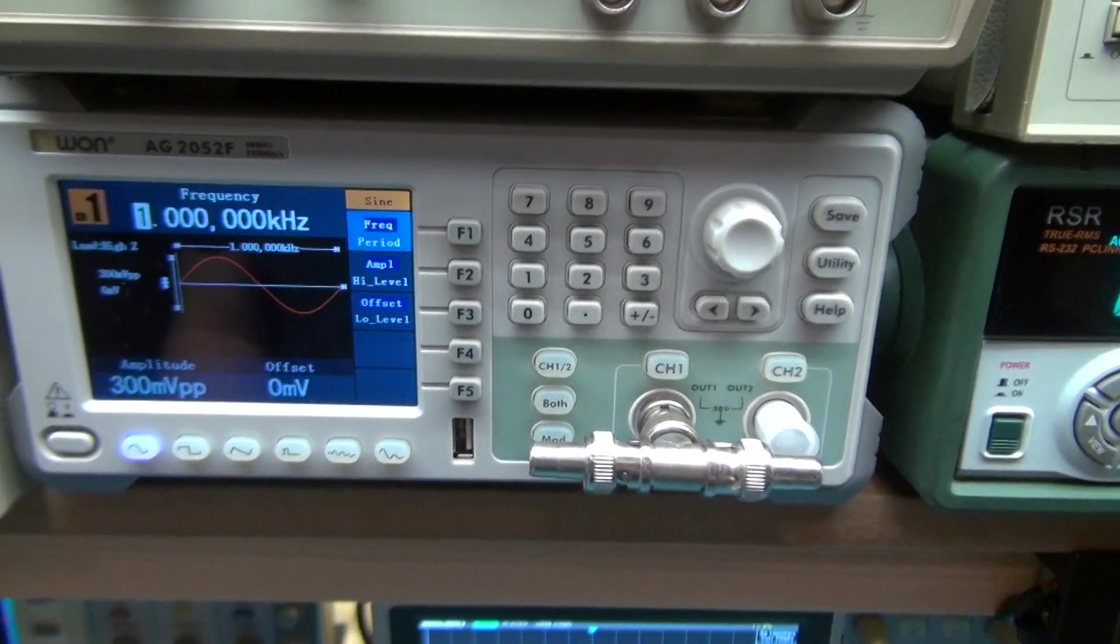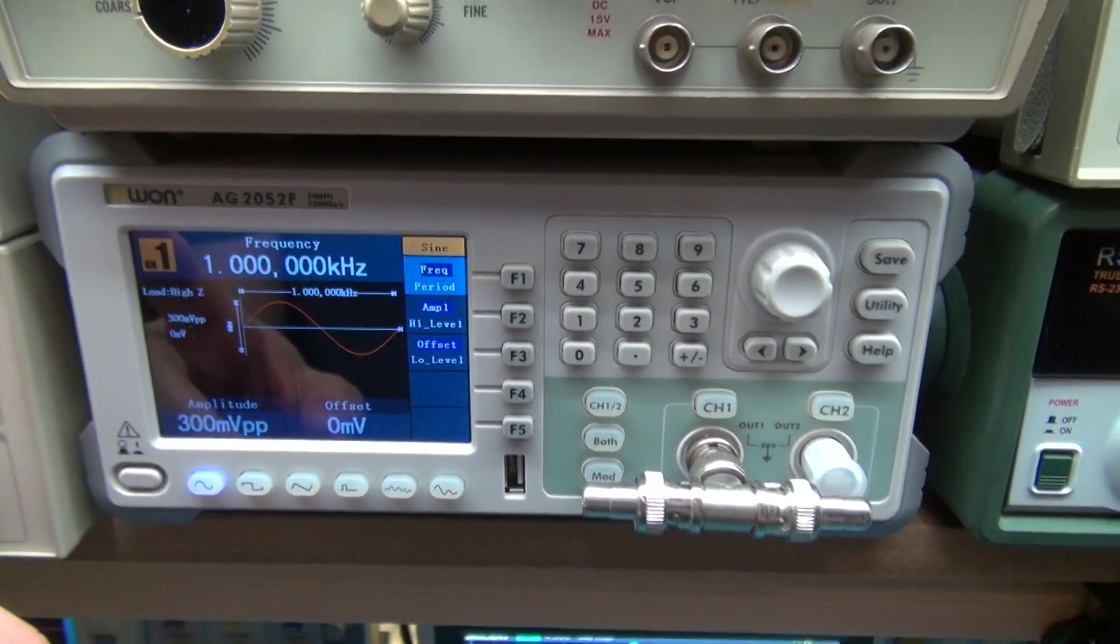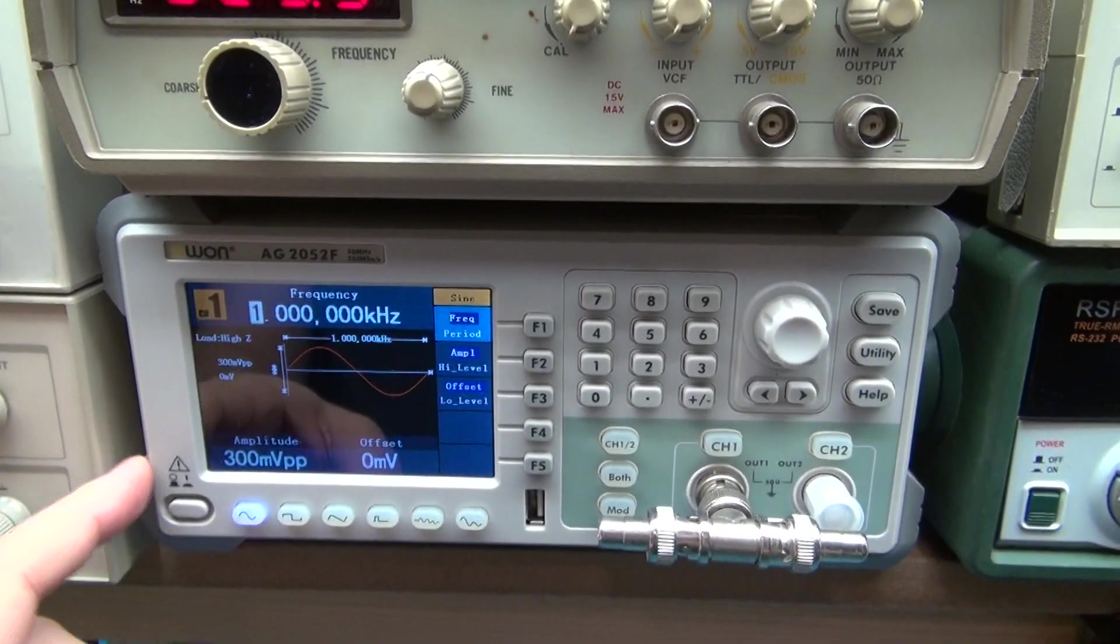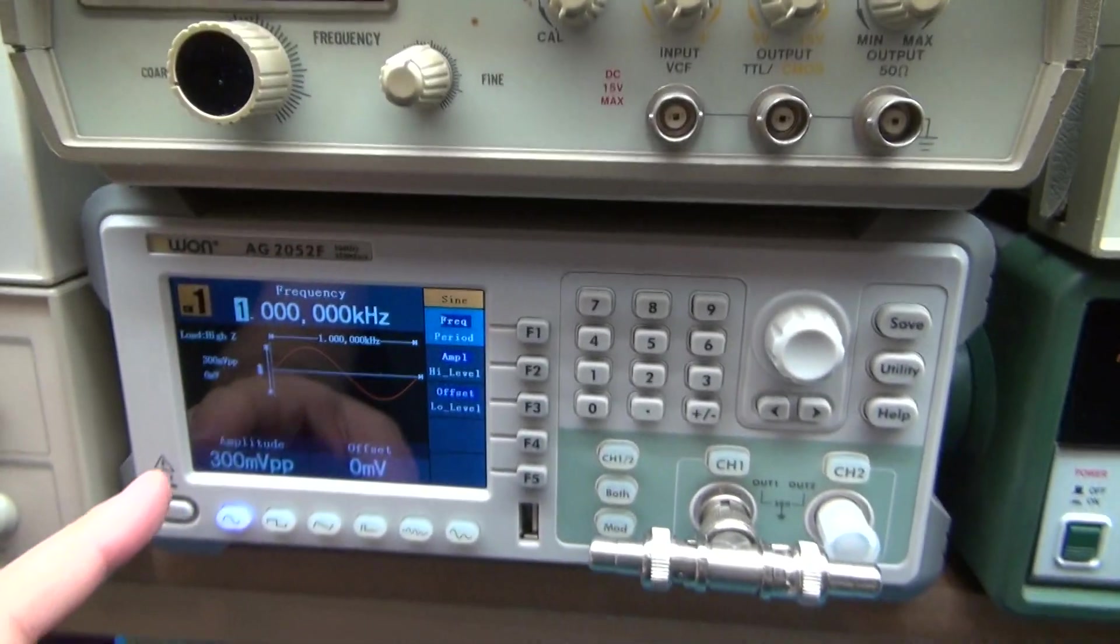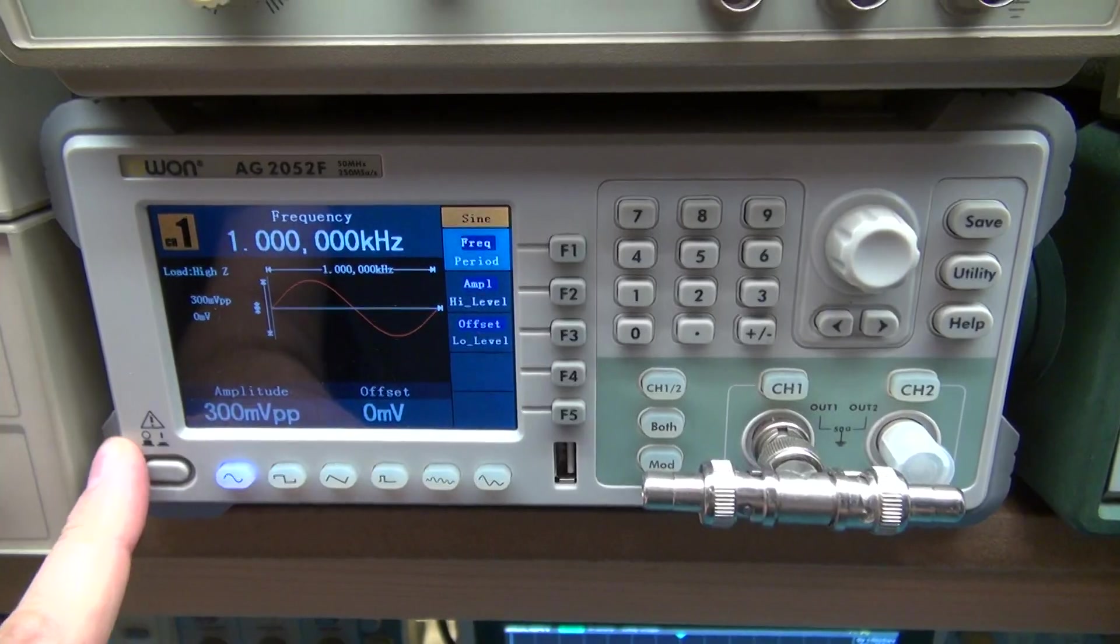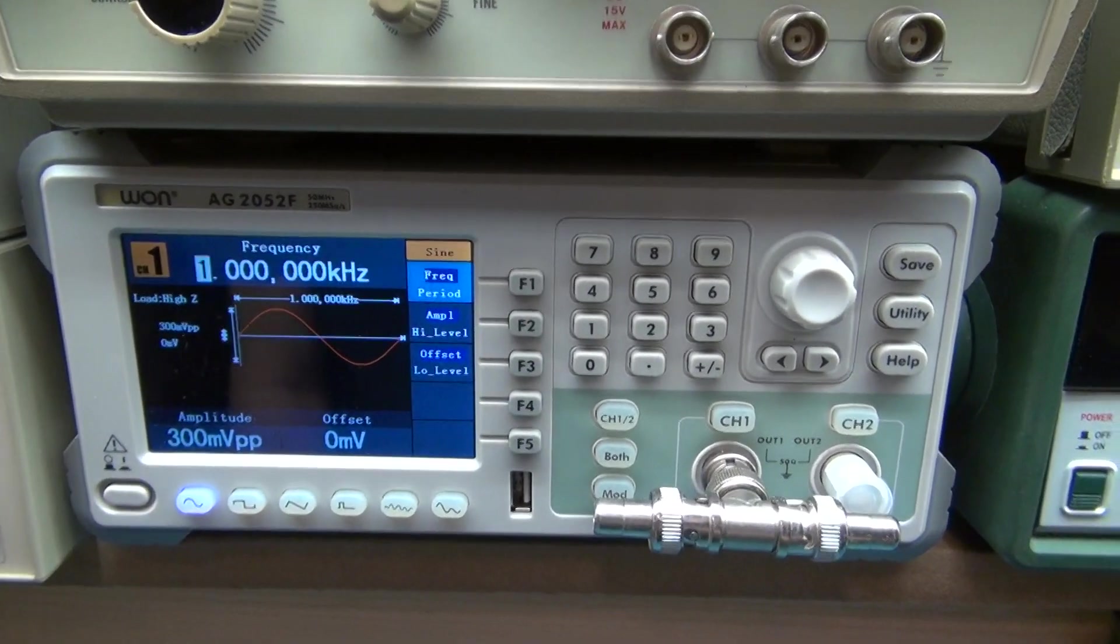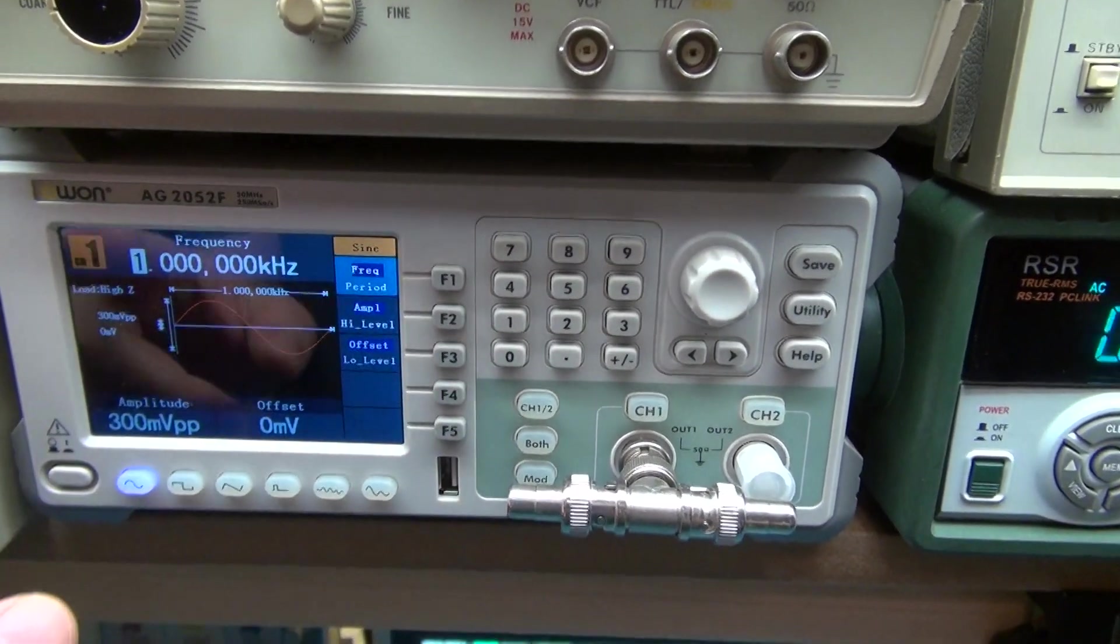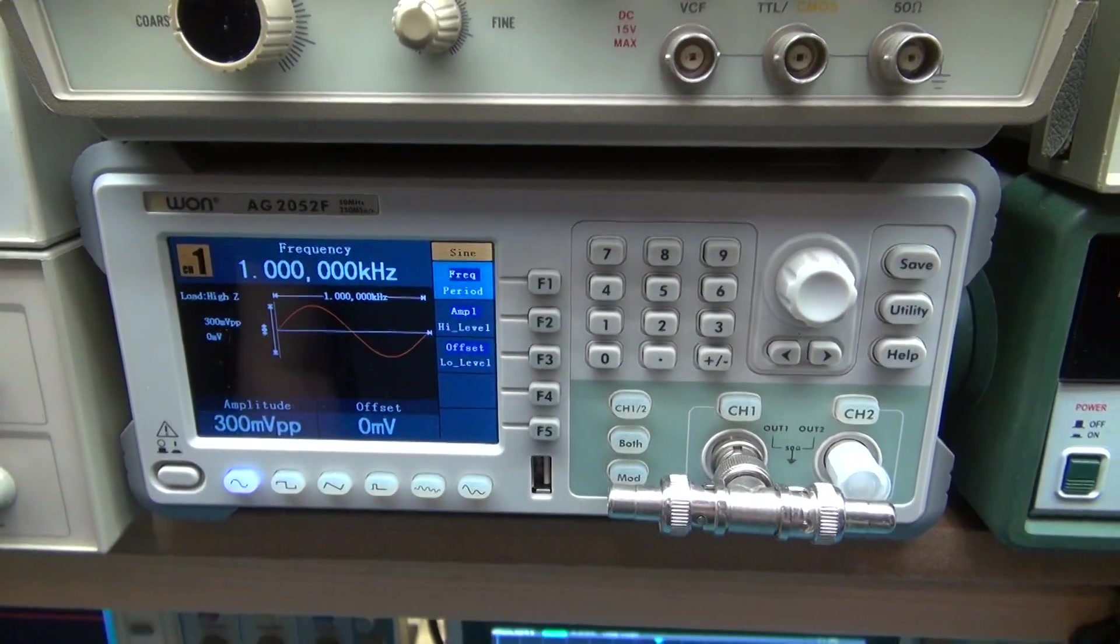Below it is the new arbitrary waveform generator, Owon AG2052. I got this after I was a little frustrated with this one. I was trying to test some amplifiers and I wasn't getting very precise frequency or amplitudes. So I decided to get this because it made a whole lot easier for me to dial in what I wanted for frequency and amplitude. Plus this does sweep modulations. It's good up to about 50 megahertz so I can do some RF stuff with this. So I really enjoy this waveform generator.